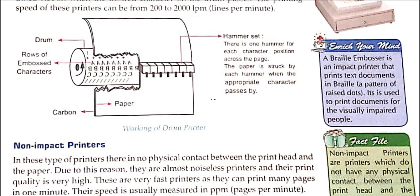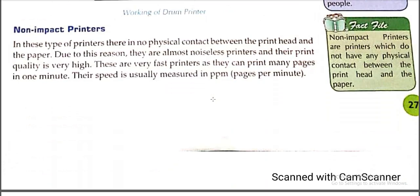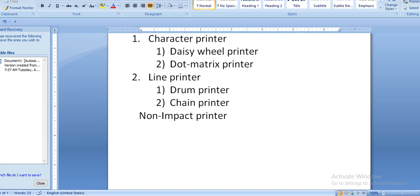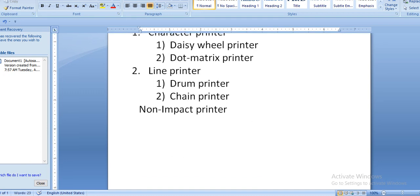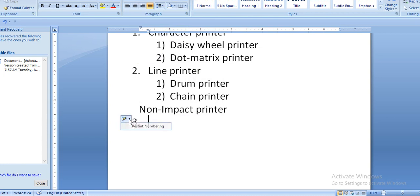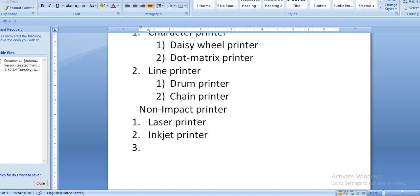Chain printer is not in your syllabus. Next is non-impact printer. Non-impact printers are of three types: laser printer, inkjet printer, and thermal printer.